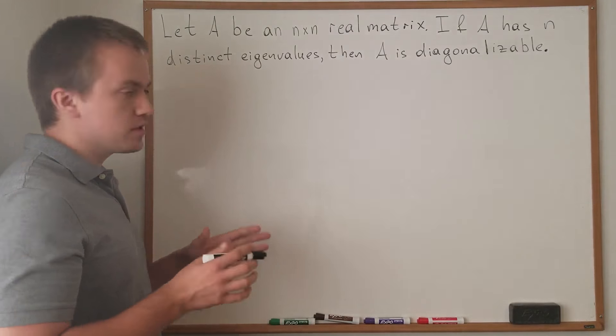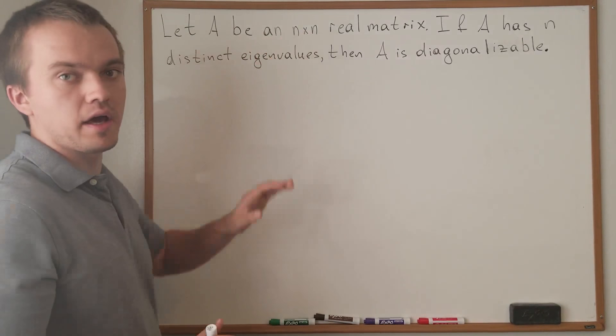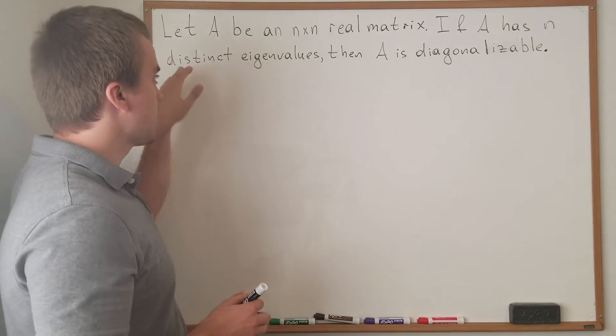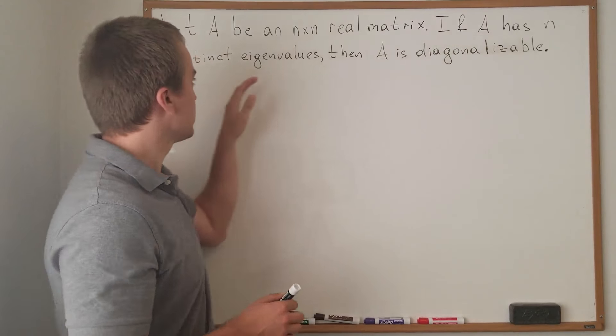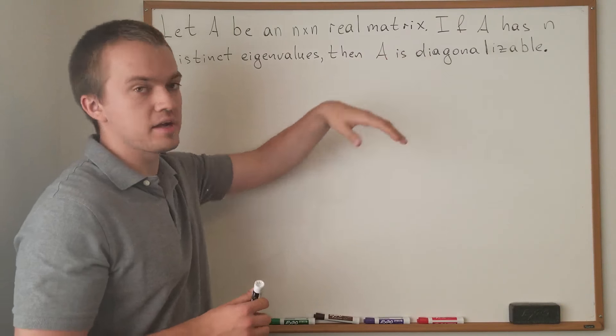In this video, what I want to discuss is: if I'm given an n by n real matrix and I know that for this matrix I'm going to have n distinct eigenvalues, then in this case A is going to be diagonalizable.